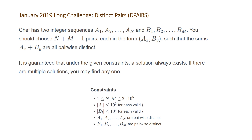The constraints are that n and m, the lengths of our lists a and b, will be between 1 and 2 times 10 to the 5th. The values of the elements in a and b will be between negative 10 to the 9th and 10 to the 9th, so integers should be fine, and all values in a and b respectively are going to be pairwise distinct within the arrays themselves.